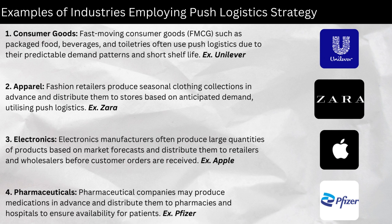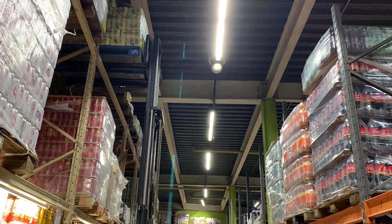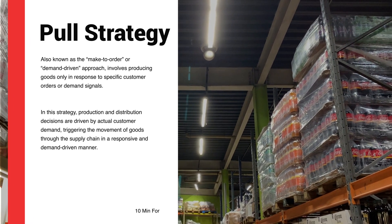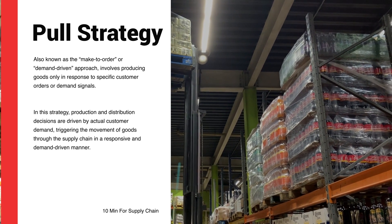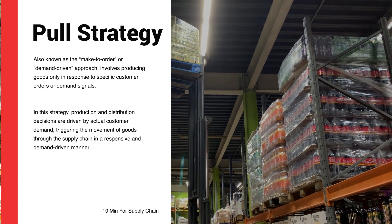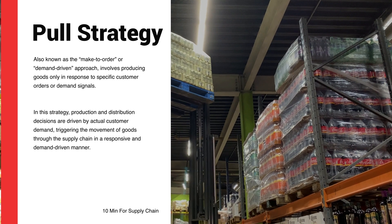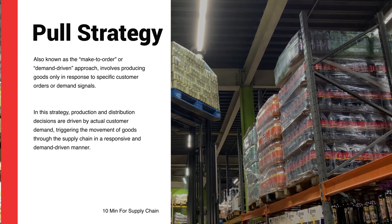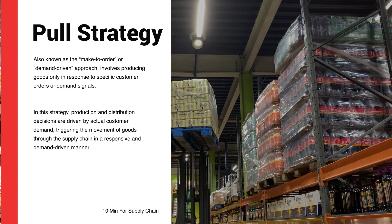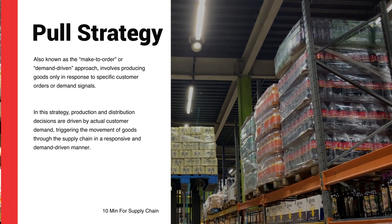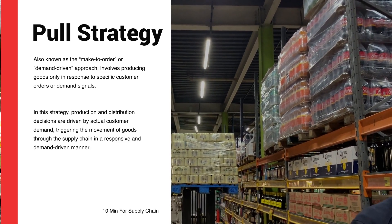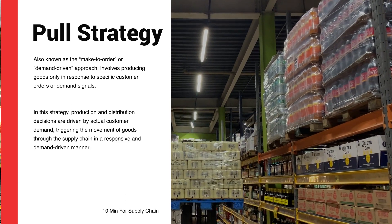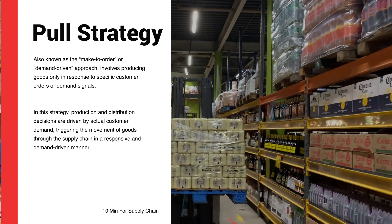Pull logistic strategy, also known as the make-to-order or demand-driven approach, involves producing goods only in response to specific customer orders or demand signals. In this strategy, production and distribution decisions are driven by actual customer demand, triggering the movement of goods through the supply chain in a responsive and demand-driven manner.